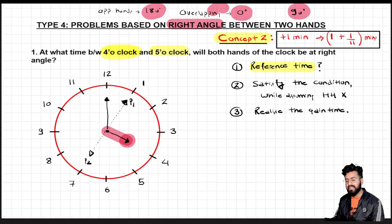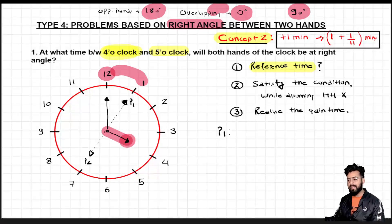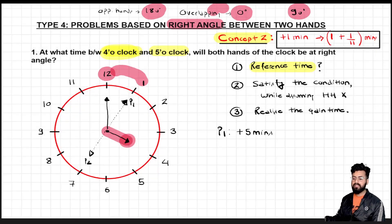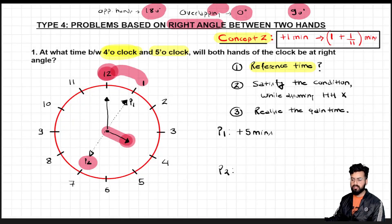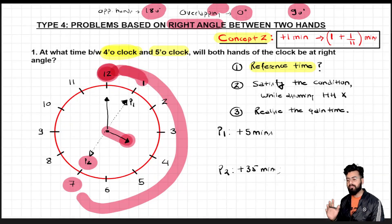For the two positions, I need to calculate the gain time. For position 1, the minute hand starts at 12 and shifts to 1 — that is 1 gap, which equals 5 minutes. So the gain time for position 1 is 5 minutes. For position 2, the minute hand goes from 12 to 7 — that is 7 gaps, which equals 35 minutes. So the gain time for position 2 is 35 minutes. Once you have these two gain times, answering the question is straightforward.